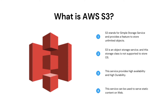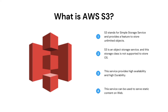Our first question is: what is AWS S3? Amazon Simple Storage Service is an object storage service that offers industry-leading scalability, data availability, security and performance. Customers of all sizes and industries can use Amazon S3 to store and protect any amount of data for a range of use cases, such as data lakes, websites, mobile applications, backup and restore, archive, enterprise applications, IoT devices and big data analytics. Amazon S3 provides management features so that you can optimize, organize and configure access to your data to meet your specific business, organizational and compliance requirements.